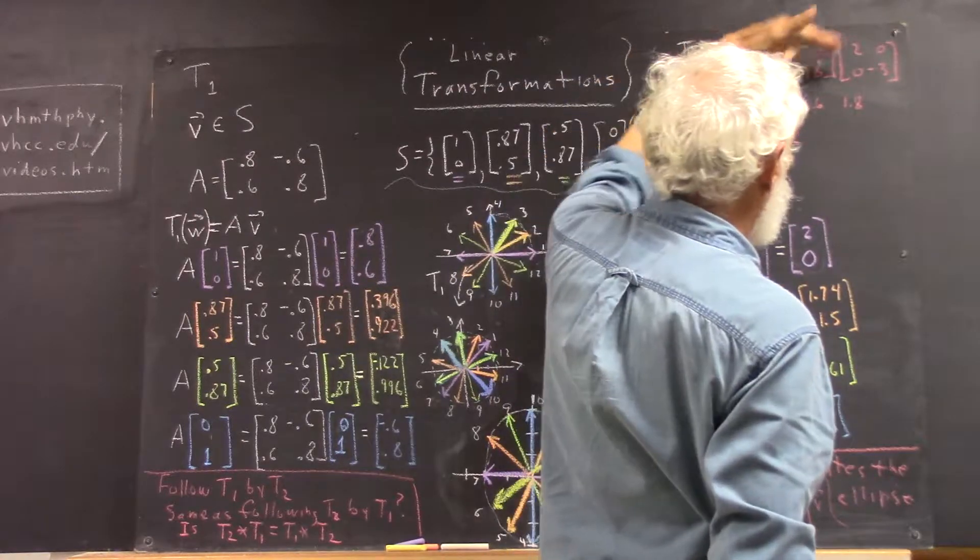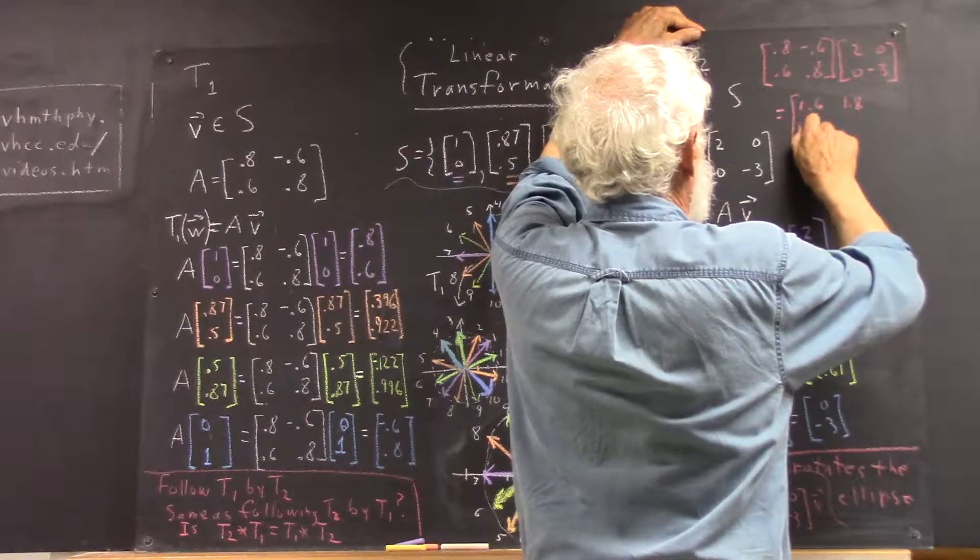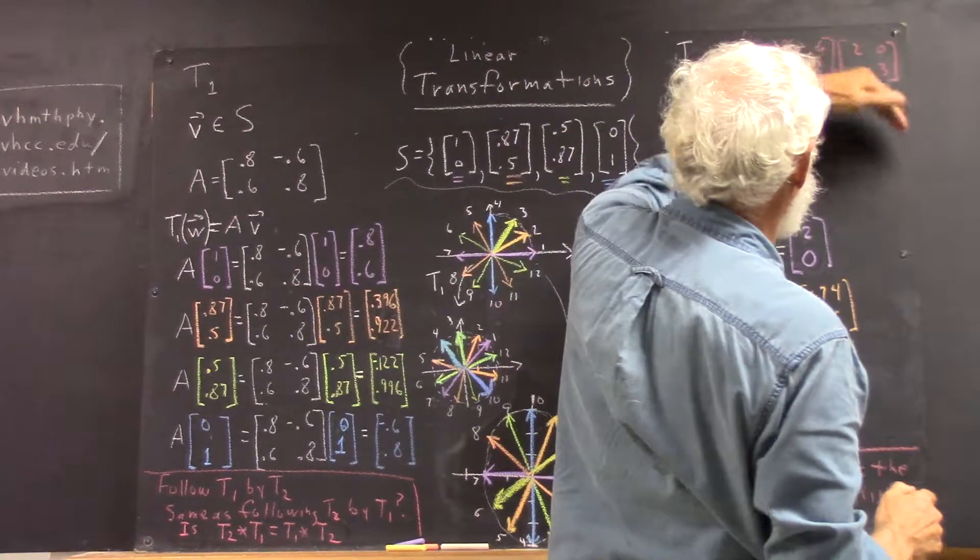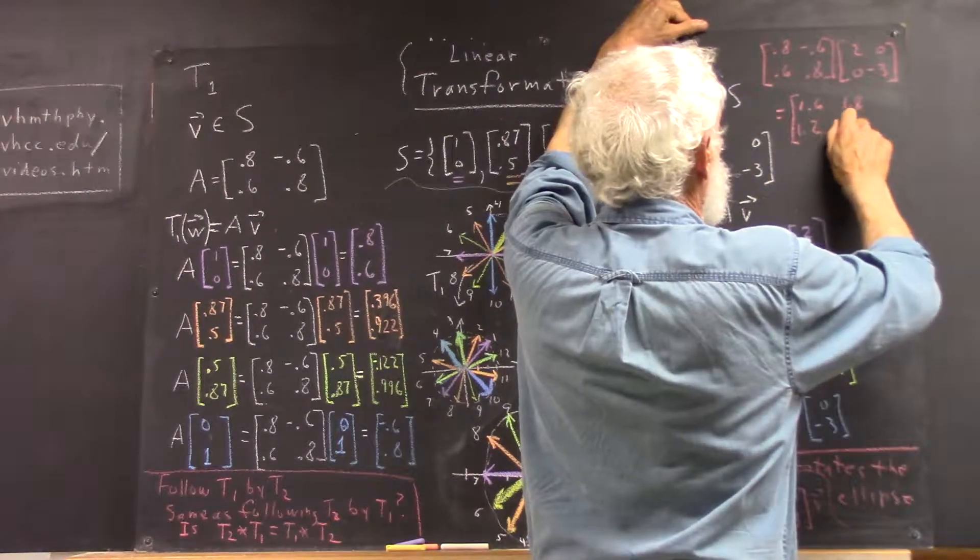Then, multiplying the second row by the first column, we get 1.2. And multiplying the second row by the second column, we get negative 2.4.